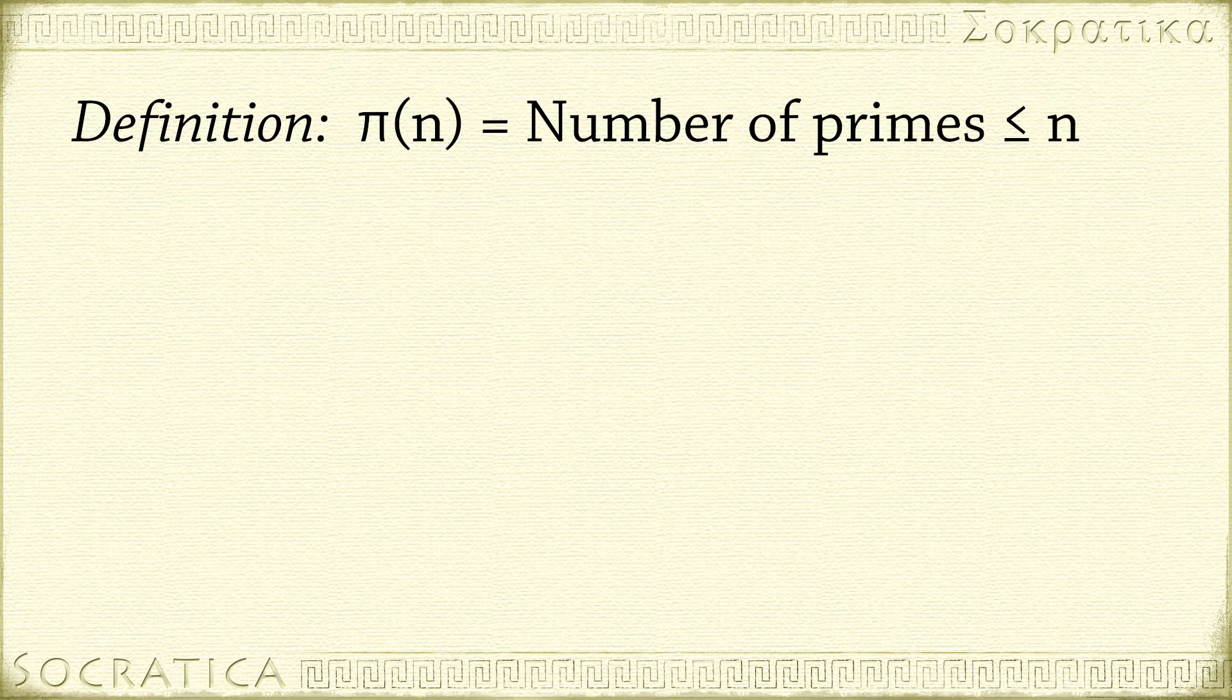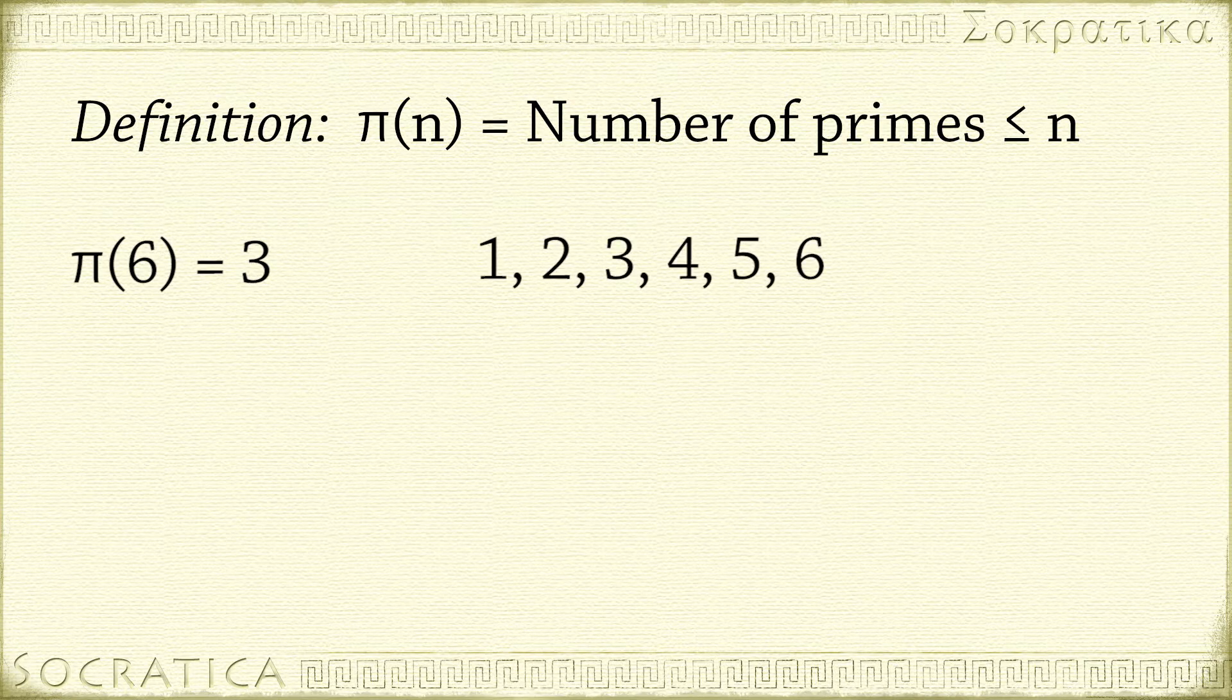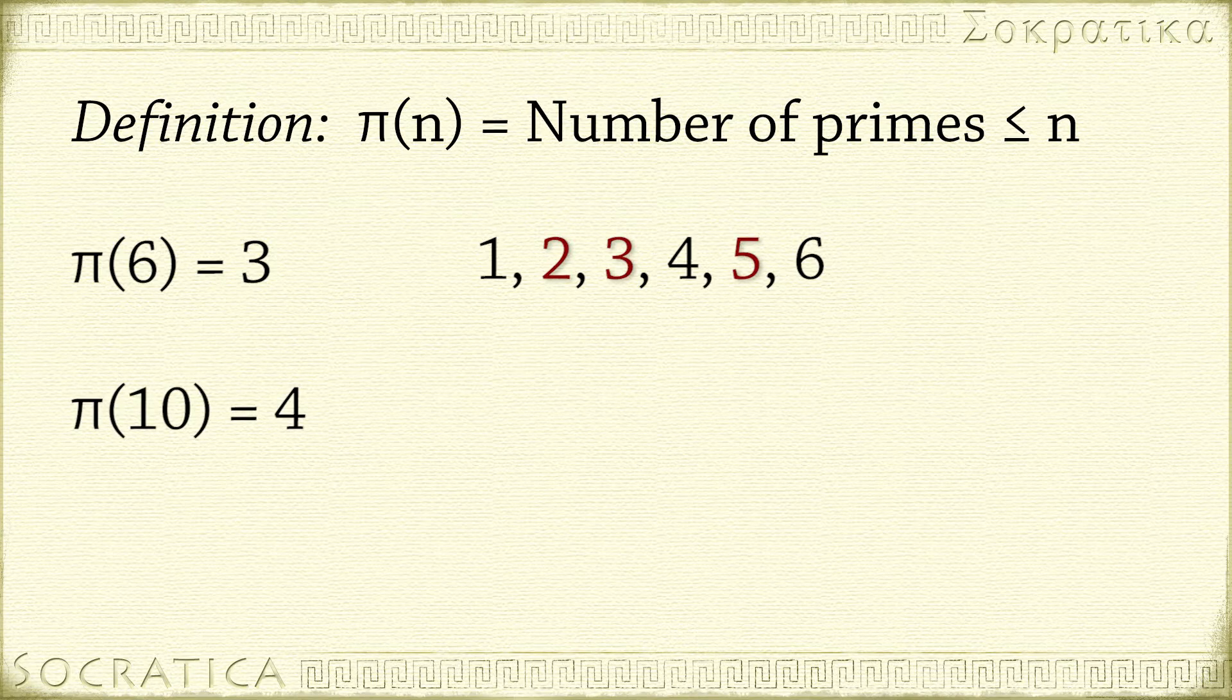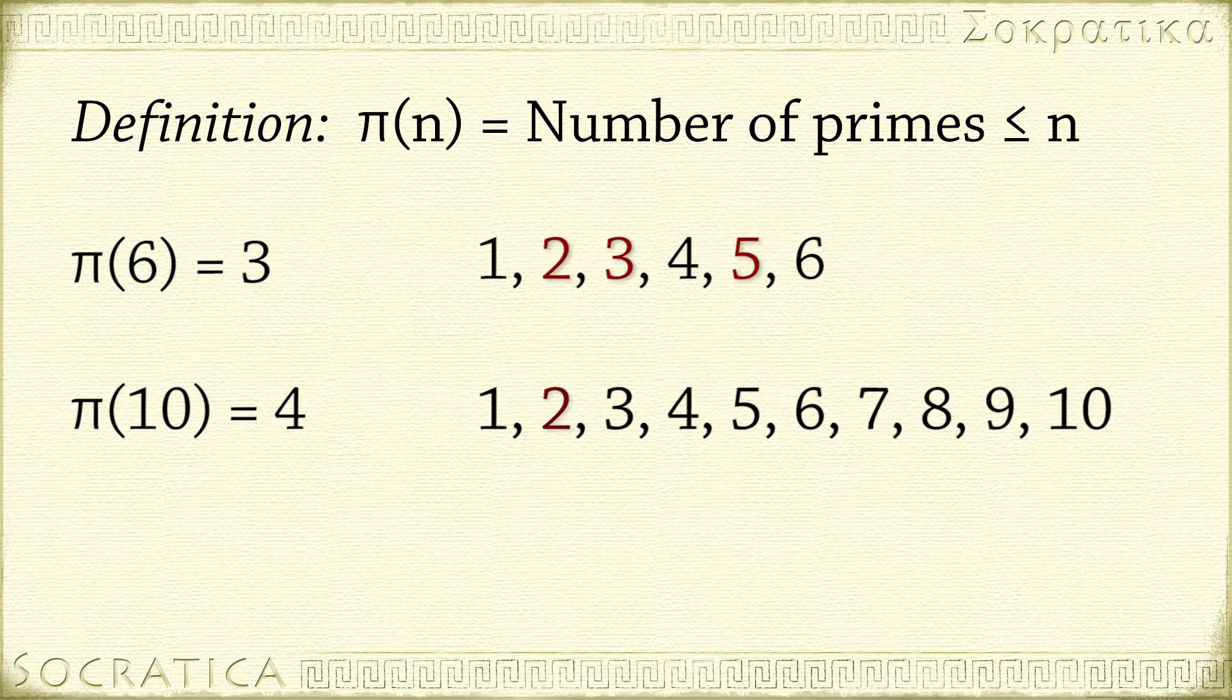Here are some examples. π(6) equals 3 because the prime numbers less than or equal to 6 are 2, 3, and 5. π(10) equals 4 because the only primes less than or equal to 10 are 2, 3, 5, and 7.